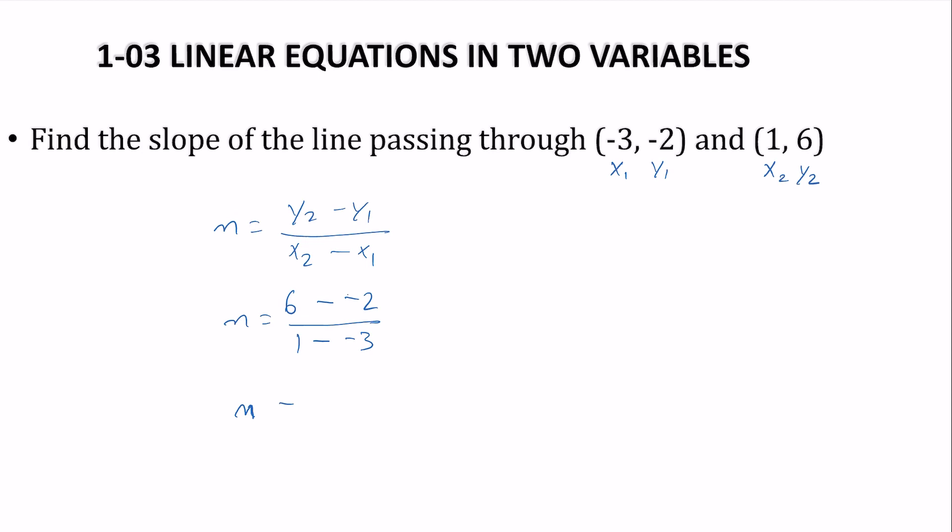We have 6 minus a negative 2. Minus a negative is like a plus. And 1 minus a negative, again that's like a plus. So 8 divided by 4 is 2. So our slope is 2. It's positive, so it rises from left to right.